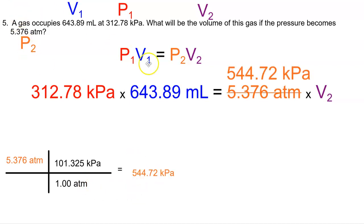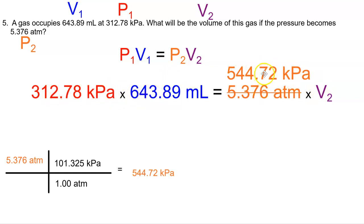Now we substitute that kPa value in where we saw ATM, and change the unit to kPa. Now I can perform the math because both pressures are in the same unit. We multiply these two numbers — since there's no unknown with them — and divide by the remaining kPa number to isolate V2. I must divide both sides by 544.72 kPa. The kPa units cancel and I'm left with milliliters. That gives us 369.72 mL.